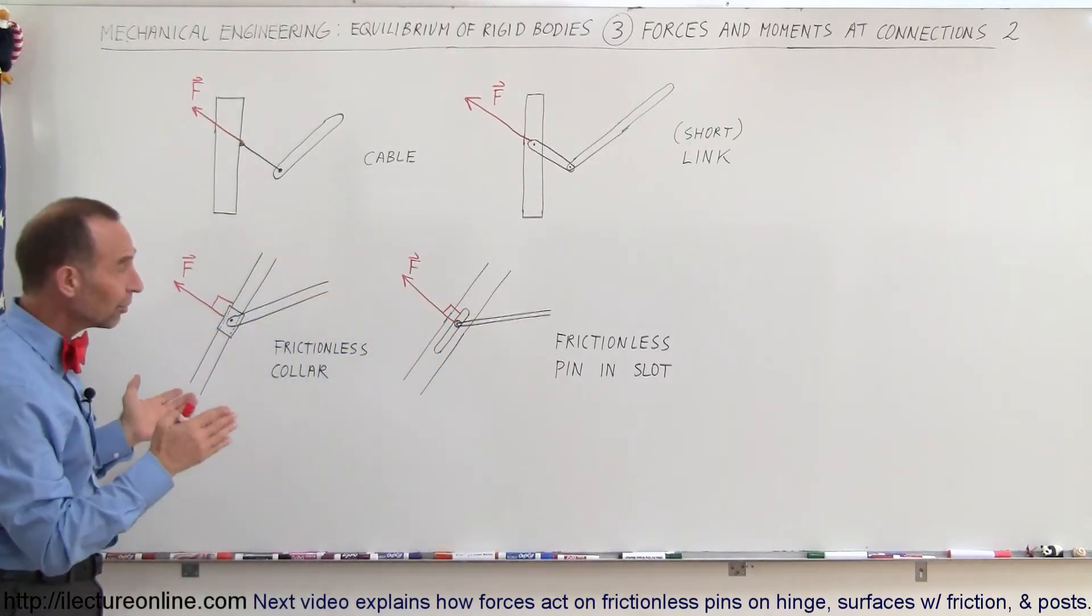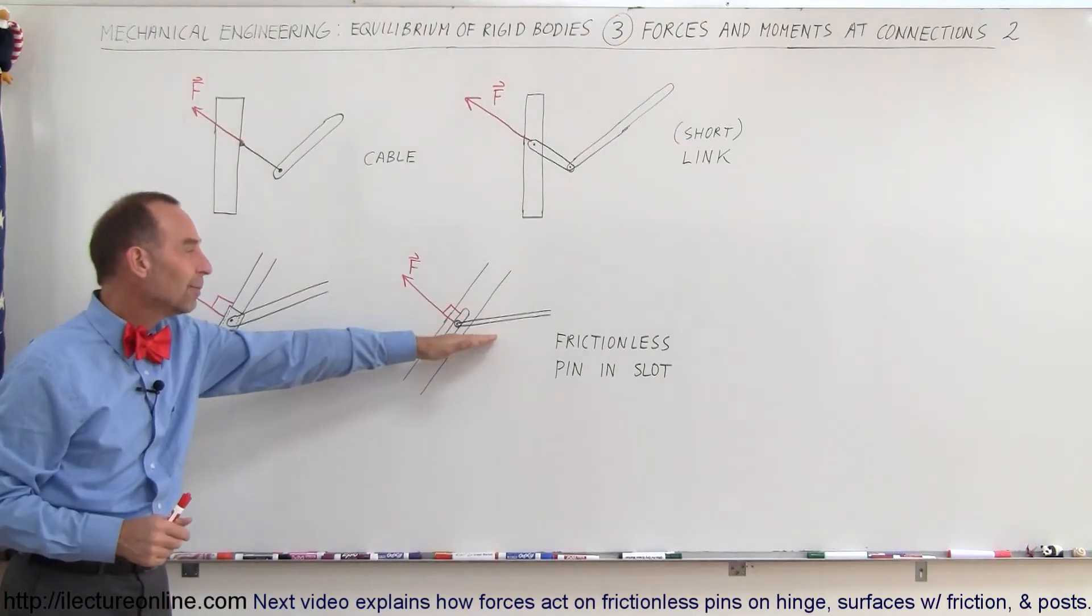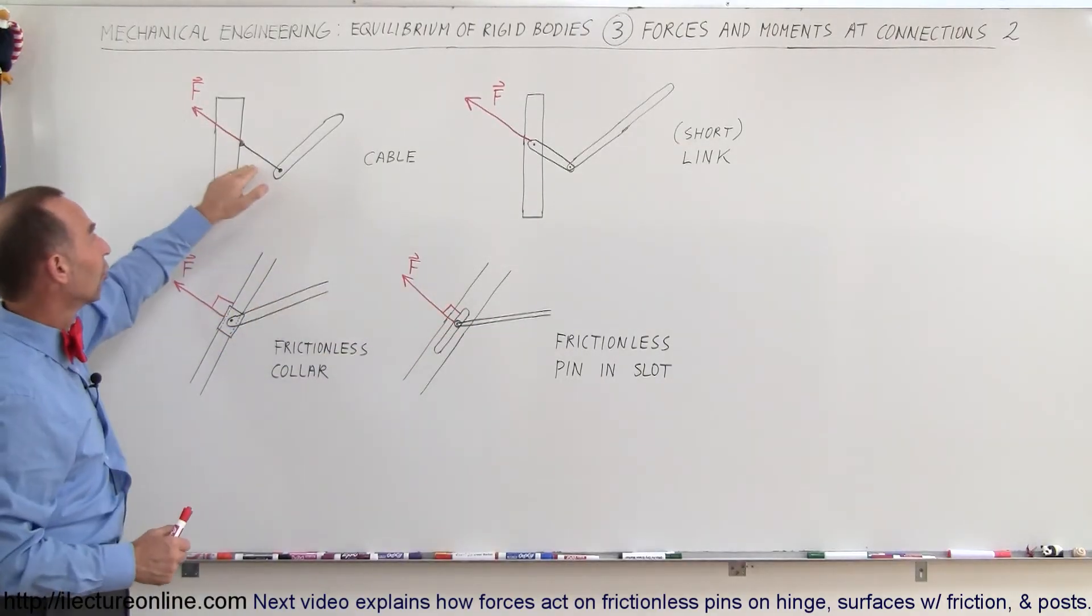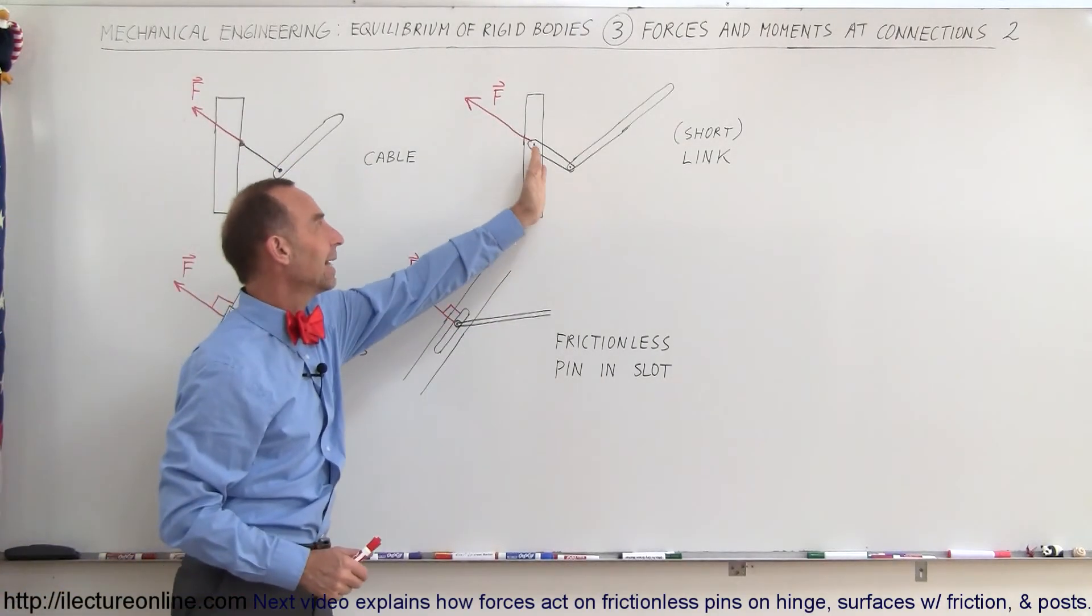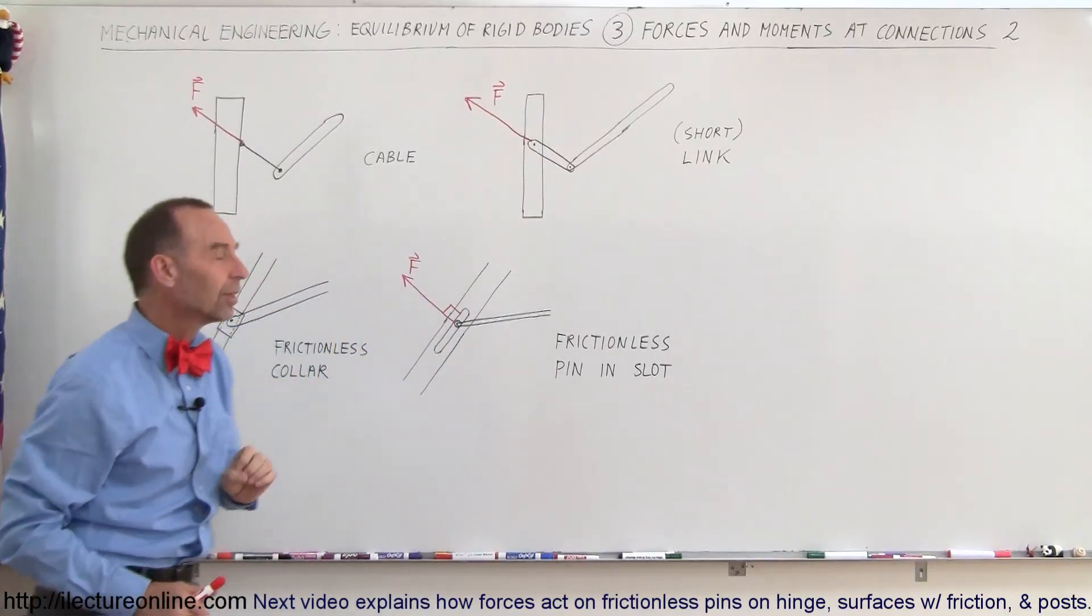And so here is the next four sets of connections between beams and their supporting structures. Cables and short links, they act in the same direction as the cable and the link.